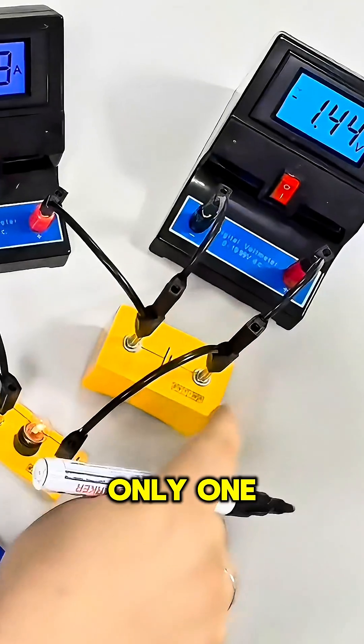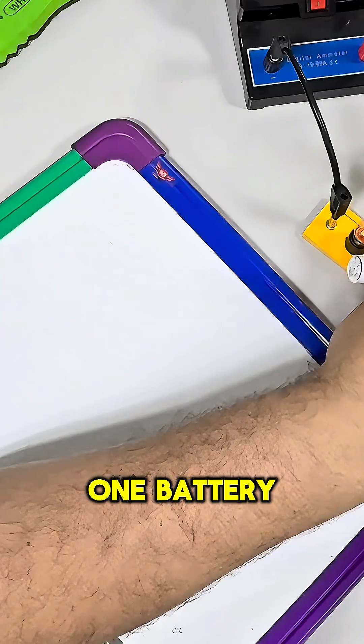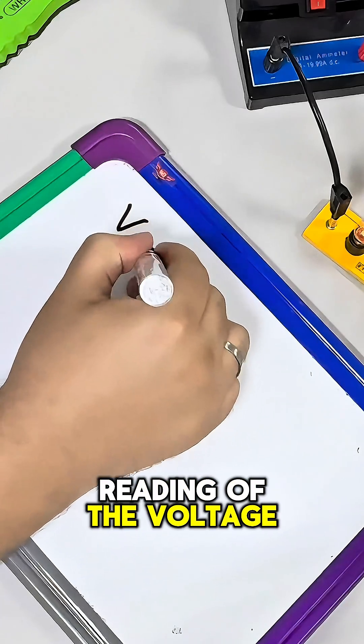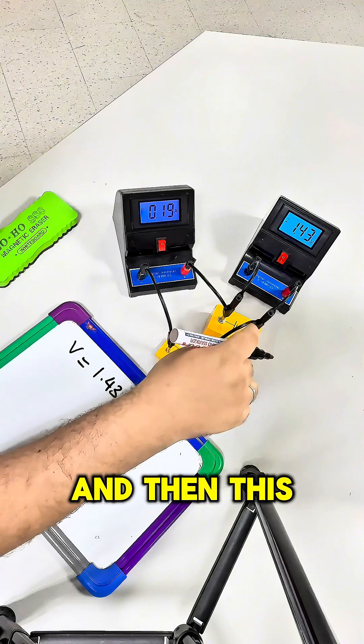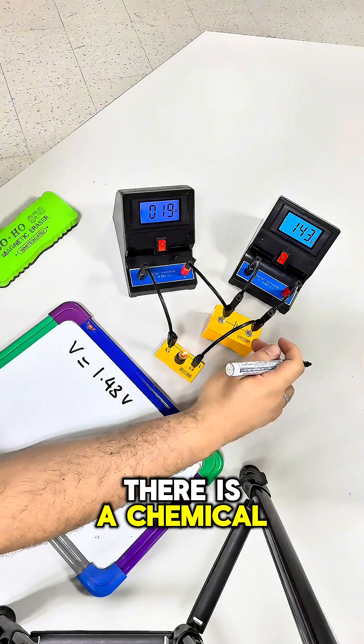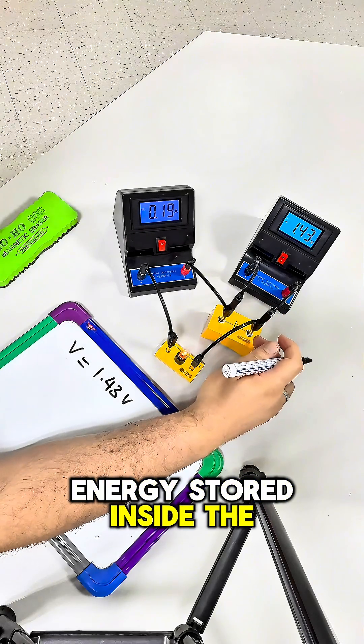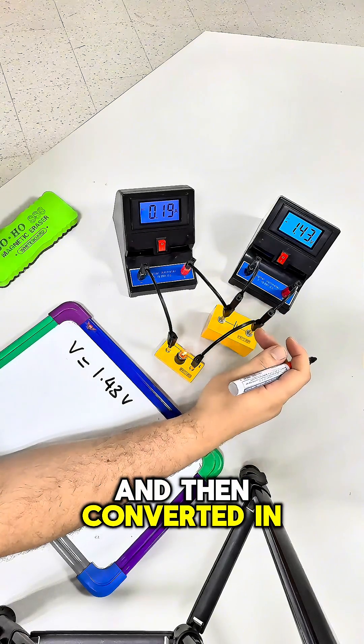In this video, we have one power supply, one battery, and the reading of the voltage which is 1.43 volts. There's chemical energy stored inside the battery which is converted into a form of electrical energy.